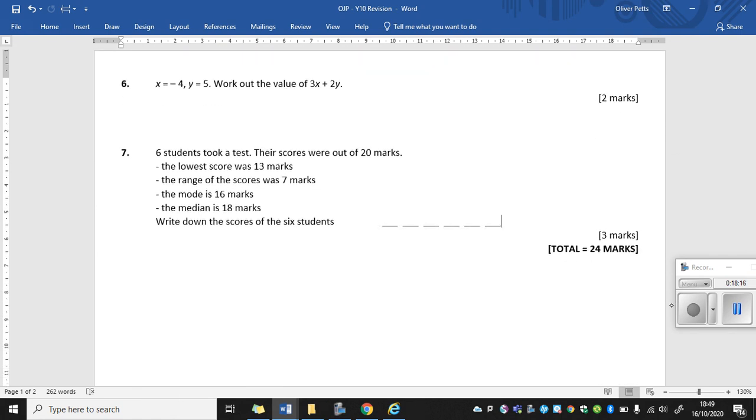I've got two numbers here. X equals minus 4. And Y equals 5. I need to work out the value of 3X plus 2Y. So this is going to be a substitution question. So 3X means 3 times X. But instead of X we've got minus 4. So I'm going to substitute in minus 4. I've then got plus and then 2Y which is 2 times Y. I'm going to replace Y with 5.